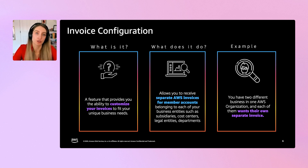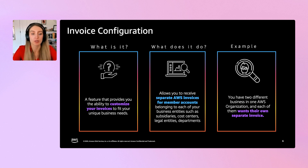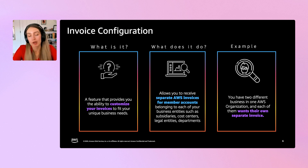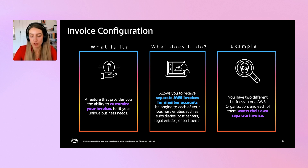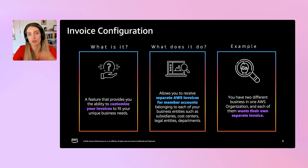Invoice Configuration allows you to configure what those invoice groupings look like and receive separate AWS invoices for separate groups of member accounts. The common use case is if you have two different business units in your organization and each one wants their own invoice that only involves their spend. You can configure invoice configuration, put each of them into invoicing groups, and then get two separate invoices — one for each business unit.